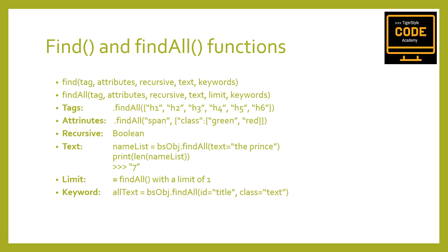The two functions are extremely similar, as evidenced by their definitions in the Beautiful Soup documentation — please check the documentation. Looking at find, it takes the arguments: tag, attributes, recursive, text, and keywords. Find_all is similar, just with an additional limit argument.